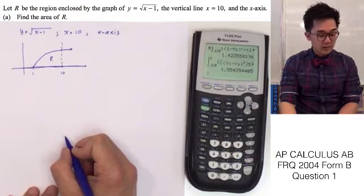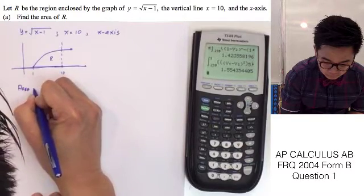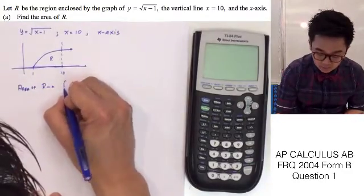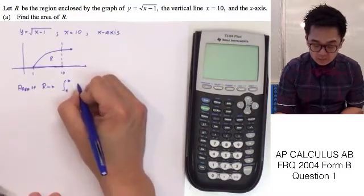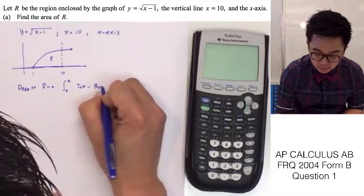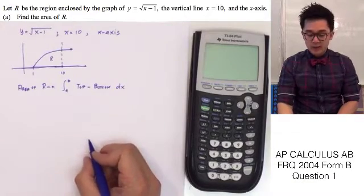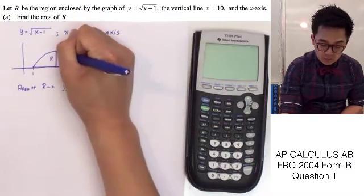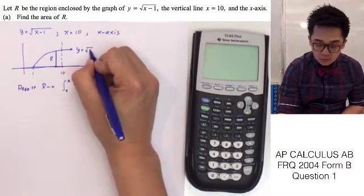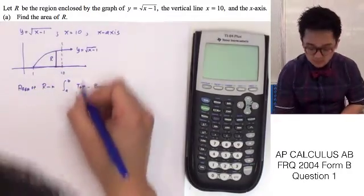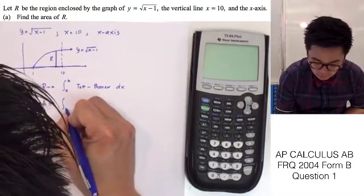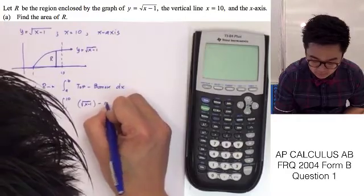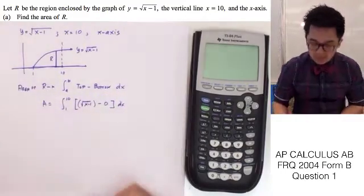Problem number 1: we need to find the area of R. To find the area of R, it's the integral from a to b of our top function minus our bottom function evaluated in terms of x. We know the upper and lower limits will be 1 and 10. Our top function is y equals square root of x minus 1, and the bottom function is equal to 0.